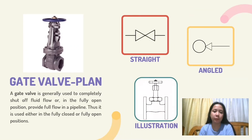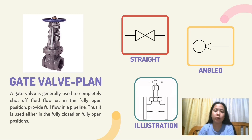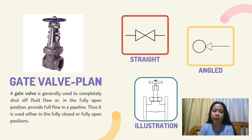Gate valve. A gate valve is generally used to completely shut off fluid flow, or in the fully open position, provide full flow in a pipeline. Thus, it is used either in a fully closed or fully open position. Here are the symbols of the gate valve: straight, angled, and the gate valve illustration.